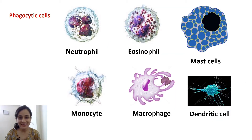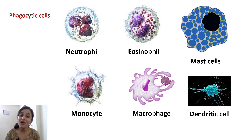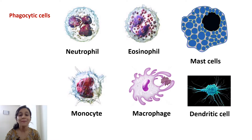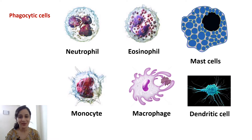I have already discussed that phagocytic cells are actually a component of the second line of defense. The second line of defense destroys those pathogens which have already entered our body and somehow crossed the first line of defense. Neutrophil, eosinophil, monocytes, macrophages, and dendritic cells are phagocytic cells. Remember, not all cells have the capacity to undergo phagocytosis — these are special cells that can perform phagocytosis, and they are also called phagocytes.